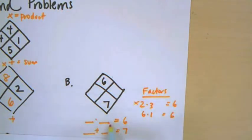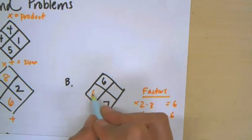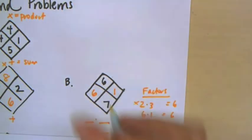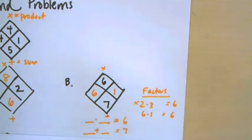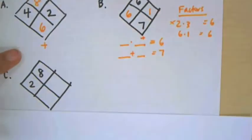Six times one, yeah, that's six, and six plus one is seven. So those are my two numbers. And once again, I like to do this little strategy of putting the plus and minus on the diamond problem to keep myself organized.